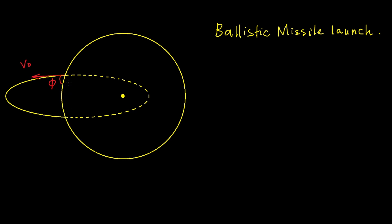Suppose that a projectile is fired from a planet's surface with initial speed V0 and elevation angle phi. The task is to find the firing range d, that is the arc distance on the planet's surface between the launch point and the point of impact.